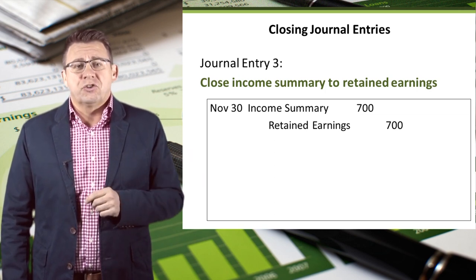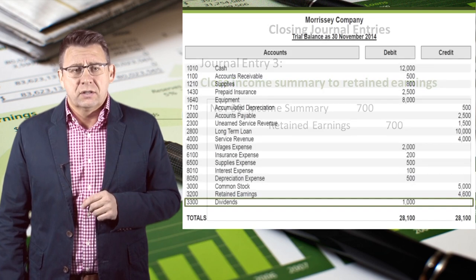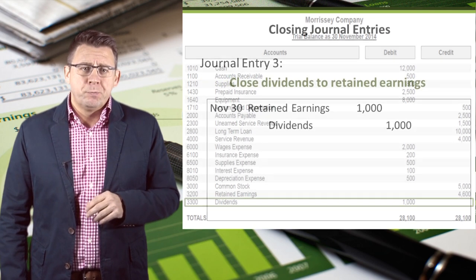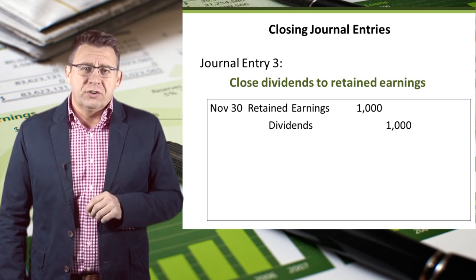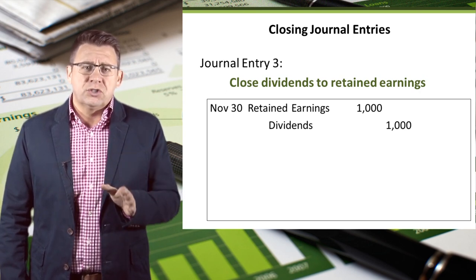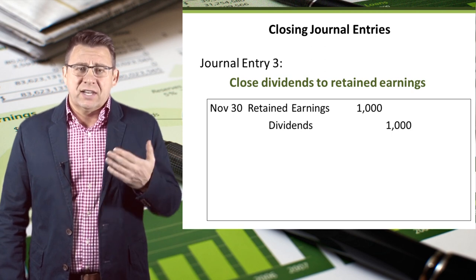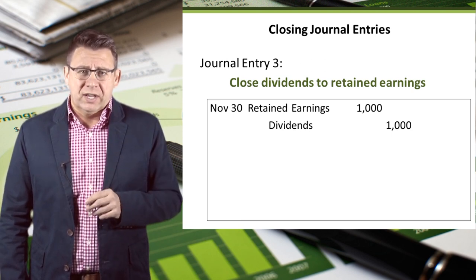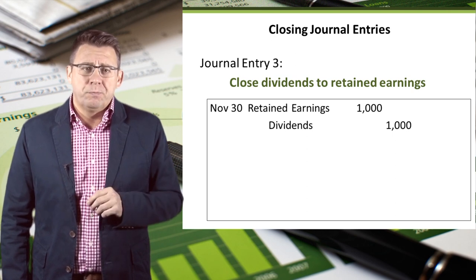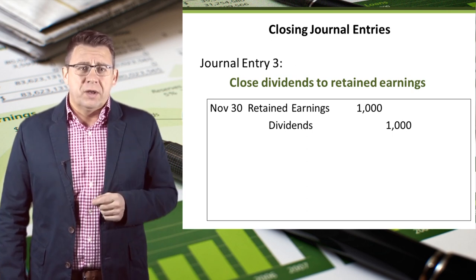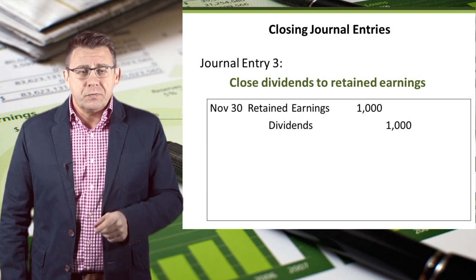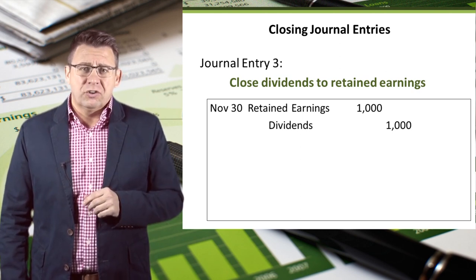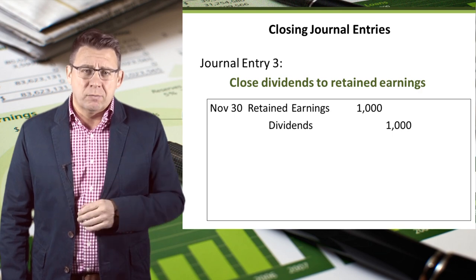The credit is now to retained earnings. The last temporary account to close is dividends. The final journal entry is to close dividends to retained earnings. Since dividends has a $1,000 debit balance, we will credit dividends to make the balance zero, and retained earnings will then be debited. Note that dividends is not an income statement account, so it is not closed to income summary first.